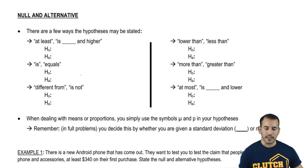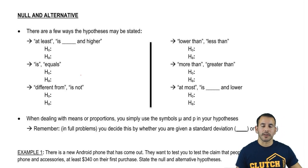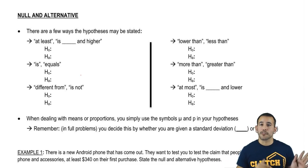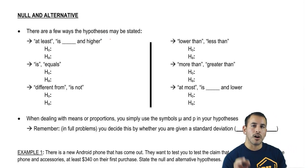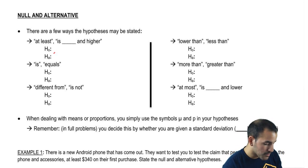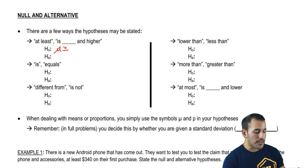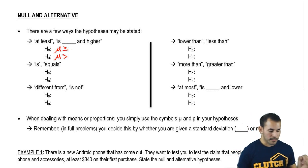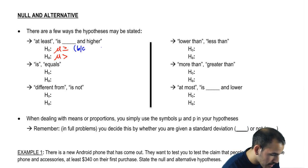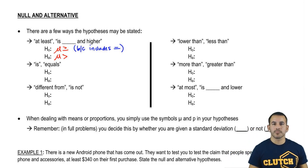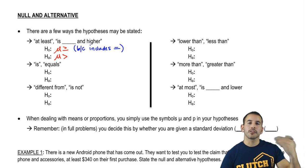So there are a few ways that hypotheses may be stated. If you're looking at the claim and it says, for example, people's weights are at least 140 pounds — if you're seeing the word 'at least,' since it includes an equal sign, it's saying 140 and up. So that's going to fall on the null, and then the alternate is going to be the opposite: less than. So if the claim says at least, that one's going to be the null; the alternate is going to be the exact opposite.